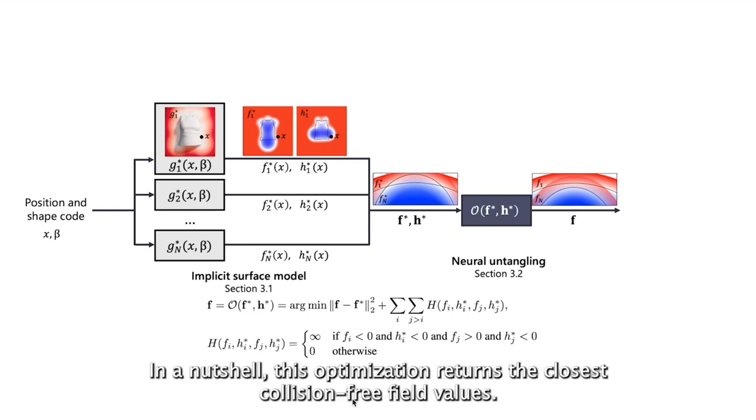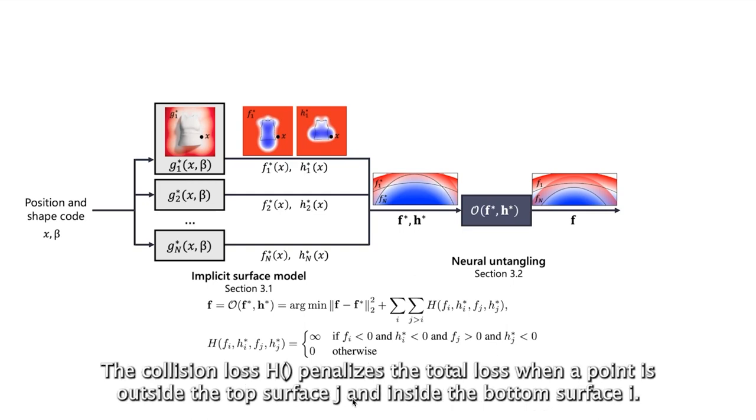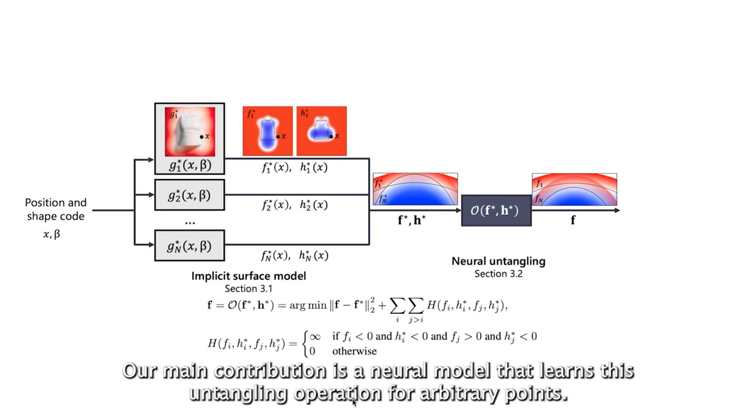In a nutshell, this optimization returns the closest collision-free field values. The collision loss h penalizes the total loss when a point is outside the top surface j and inside the bottom surface i. Our main contribution is a neural model that learns this untangling operation from arbitrary points.